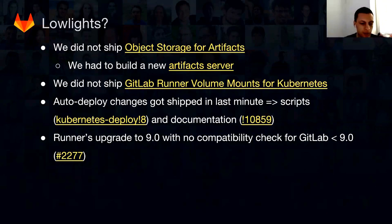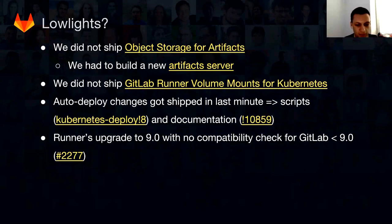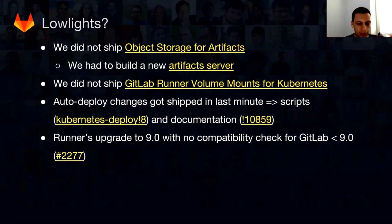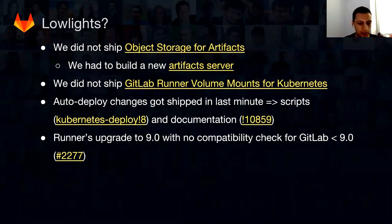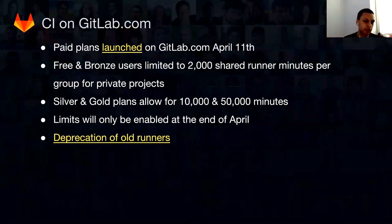Another low light is the runner upgrade process. With 9.0 of the runner, we dropped backward compatibility with previous releases and had some backlash from the community. They usually upgrade the runner only to the latest version. We didn't have a failsafe mechanism to make visible to people what the problem was with the runners. So we had to build a compatibility check into the runner to make it easy for people to discover they are using an old GitLab or a latest runner that isn't currently supported by that version.